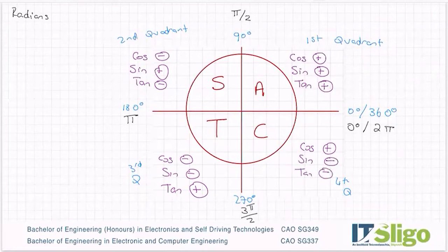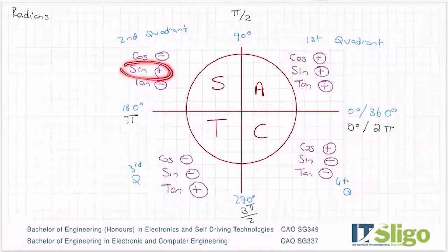So if you look around the unit circle, you'll see cos is positive in two of them. Sine is positive in two of them, tan is positive in two of them, and so on and so forth. So you have two quadrants for every plus one.